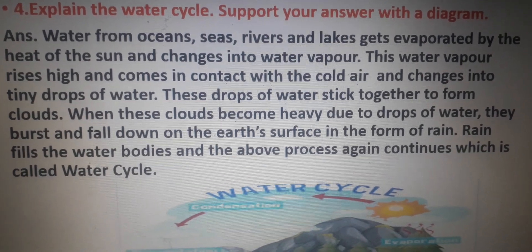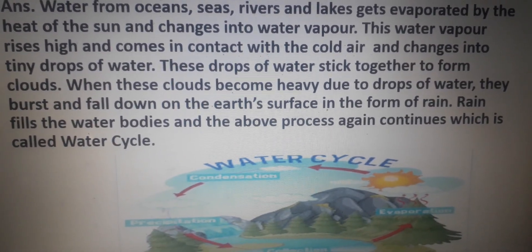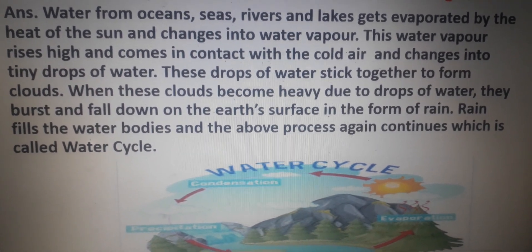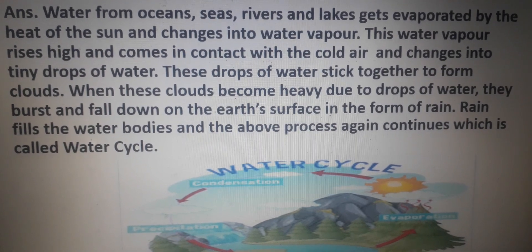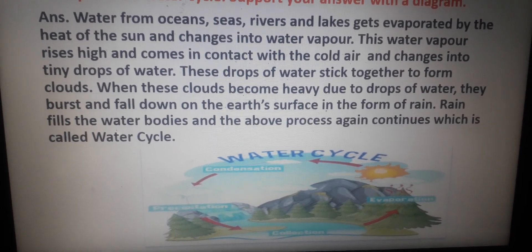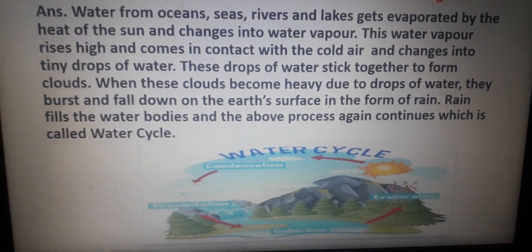Question number 4: Explain the water cycle. Support your answer with a diagram. Answer: Water from oceans, seas, rivers and lakes gets evaporated by the heat of the sun and changes into water vapor. This water vapor rises high and comes in contact with cold air and changes into tiny drops of water. These drops of water stick together to form clouds. When these clouds become heavy with drops of water, they burst and fall down on the earth's surface in the form of rain. Rain fills the water bodies and the whole process again continues, which is called the water cycle. For the diagram, students, you can take the help of this picture or the picture given in your book on the first page after the contents.